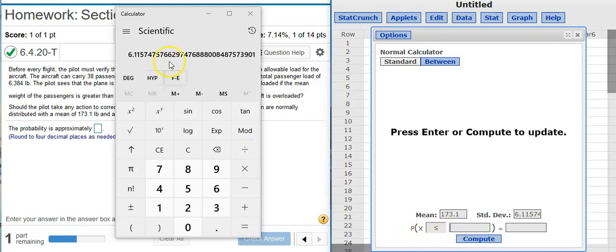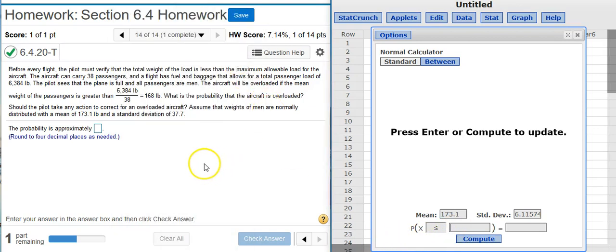Now, for this part down here, let's get the calculator out of the way. It says we want the probability of the aircraft's overloaded. It'll be overloaded if the weight, the mean weight, is greater than 168.